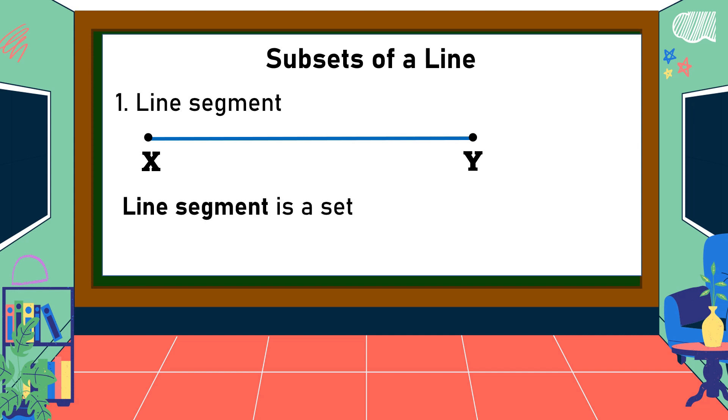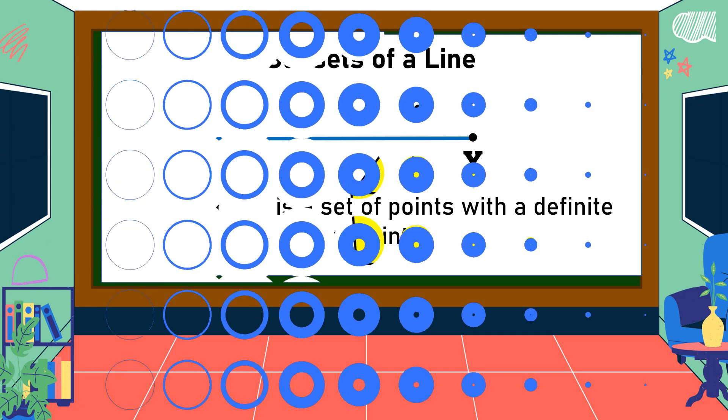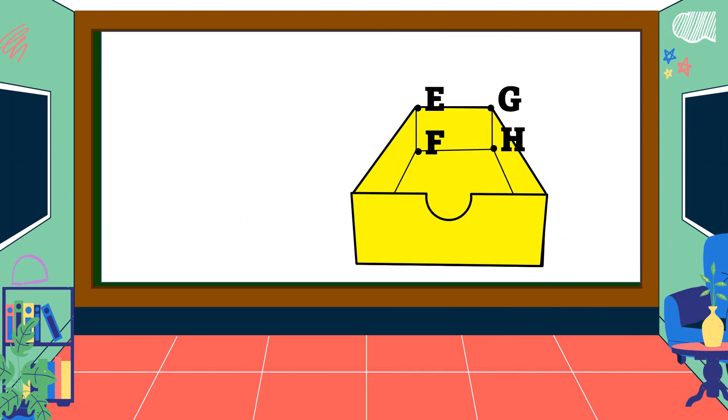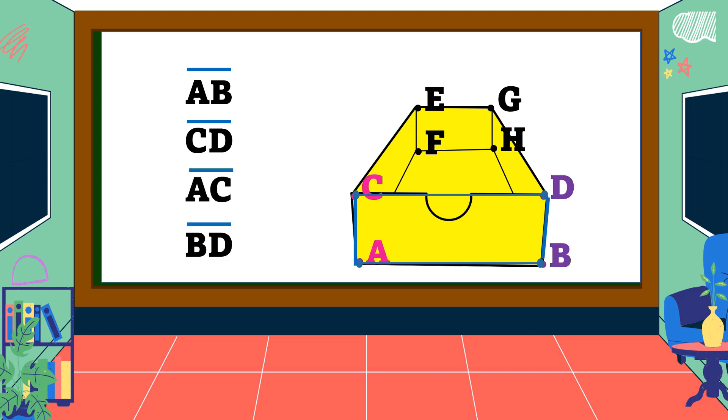Line segment is a set of points with a definite length. It has two endpoints. Let's name some of the line segments in this figure: we have segment AB, segment CD, segment AC, segment BD. These are some of the line segments in this figure.